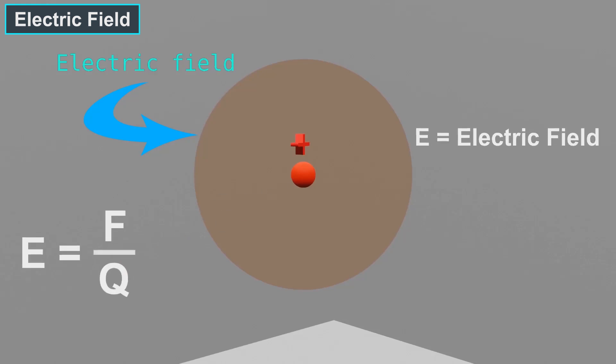Where E is the electric field, F is the force, and Q is the charge. The SI unit of electric field is volts per meter.